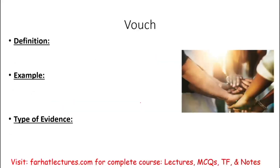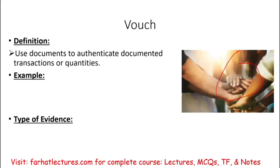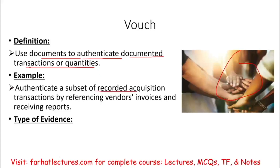Vouch means getting support. The definition is to use documents to authenticate a documented transaction — you have a transaction on the books and you look at documents to make sure whatever is recorded has evidence behind it. An example would be to authenticate a subset of recorded transactions by referencing vendors' invoices and receiving reports. You saw that a purchase was recorded; now you want to see the receiving report and the vendor invoice — you are vouching for it. The type of evidence is inspection, because you are dealing with documents.